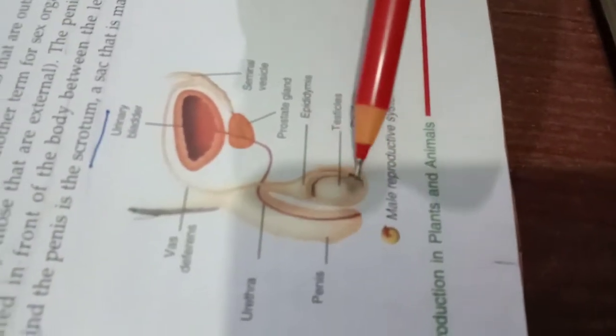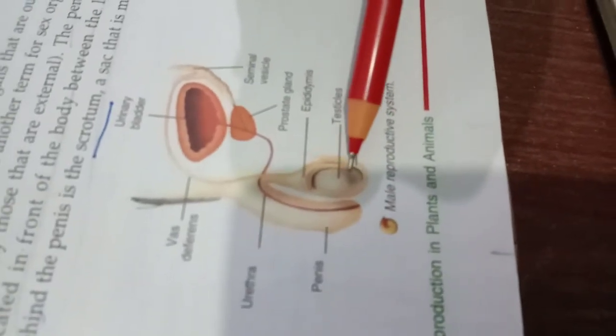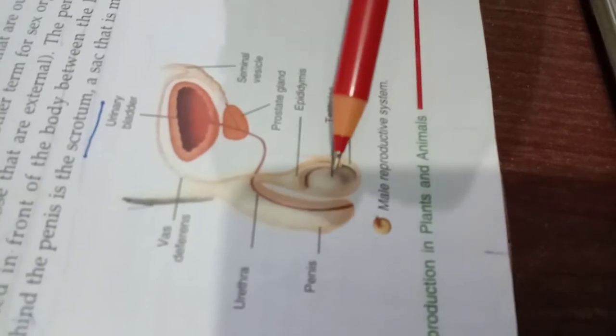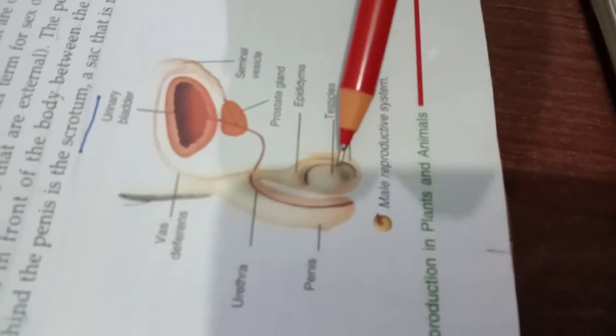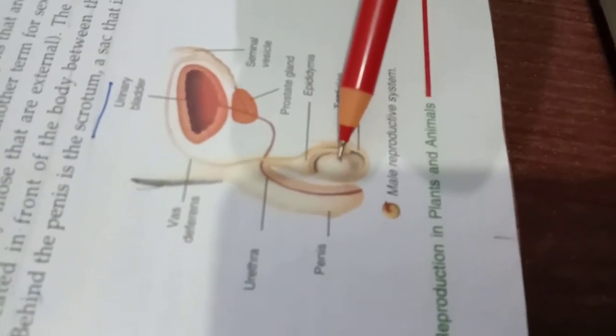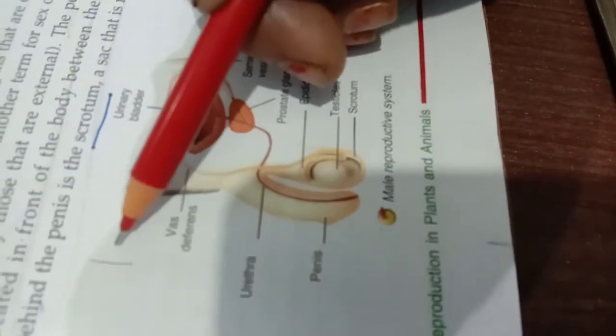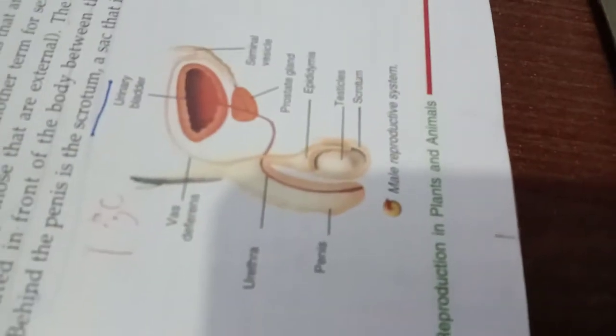What is the function of this fold of skin called scrotum or scrotal sac? It helps in protection of the testes. Secondly, it holds the testes outside the abdominal, that is below the abdominal cavity. Why? So that the temperature of the testes is one to three degrees centigrade less than the body temperature.